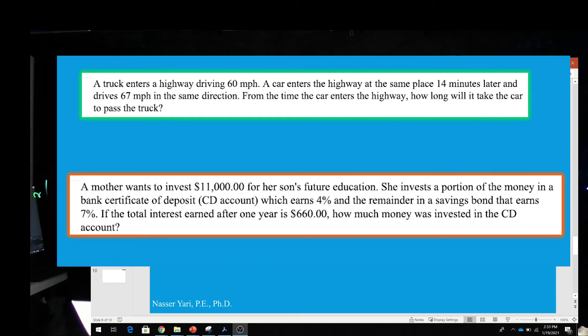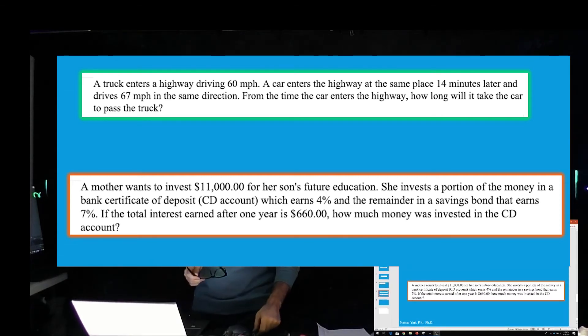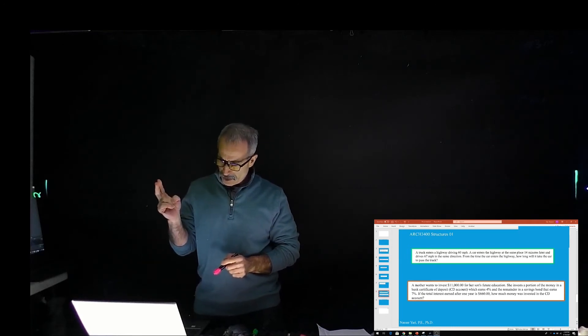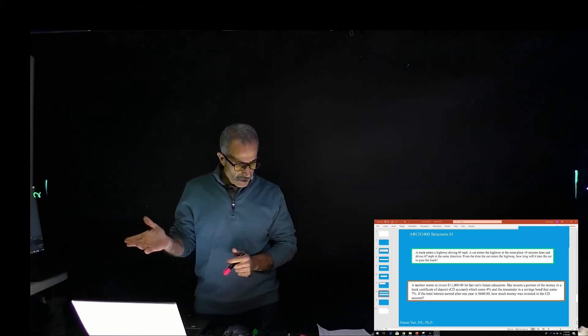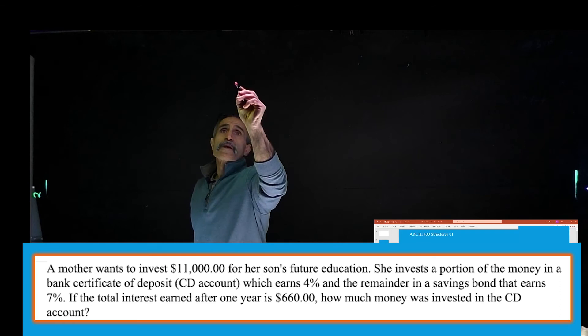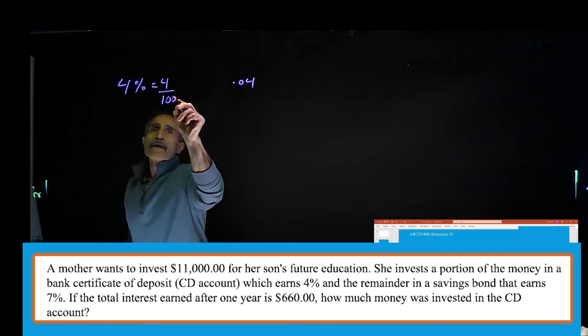The second question is a mother wants to invest $11,000 for her son's future education. She invests a portion of the money in a CD account at 4% and the rest of the money at 7%. The total interest earned after one year is $660. How much she invested in both accounts? So 4%, when you have 4%, that's the same as 4 divided by 100, which equals 0.04.